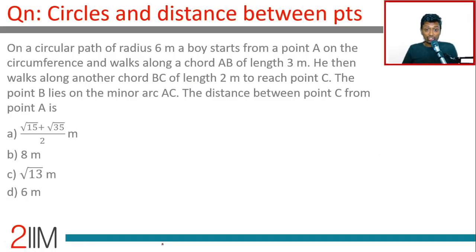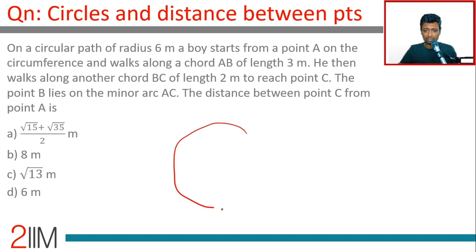On a circular path of radius 6 meters, the boy starts from a point A on the circumference and walks along chord AB of length 3 meters — half the radius.